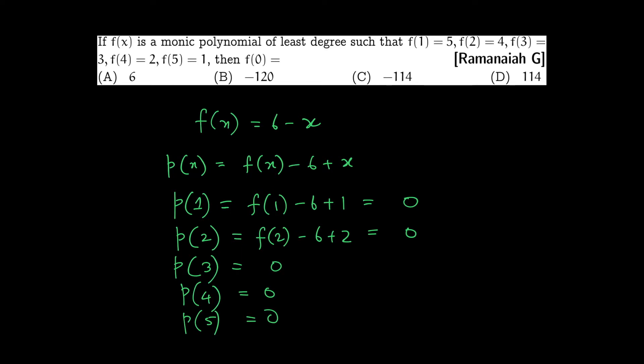Since 1, 2, 3, 4, 5 are roots of P(x), we can factor P(x) as (x-1)(x-2)(x-3)(x-4)(x-5). This is the factored form, giving us at least degree 5 for f(x).